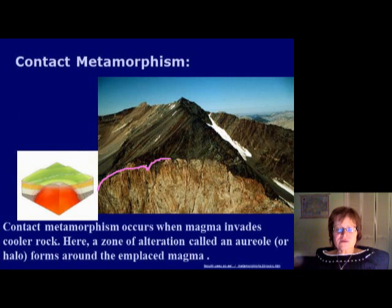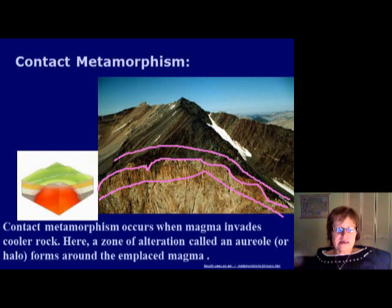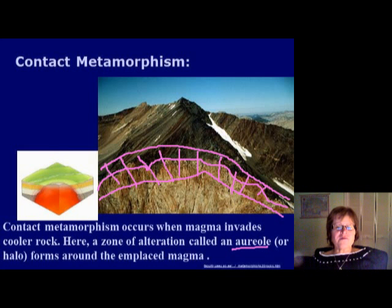In contact or thermal metamorphism, you have an igneous intrusion that cooled down very slowly. While it was cooling, the temperature was really high but pressure was not important. The surrounding rocks change into metamorphic rocks, and we call this zone an aureole or halo. This is important because in these areas many valuable minerals form. The reason for the change is mostly temperature, not pressure.